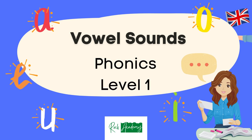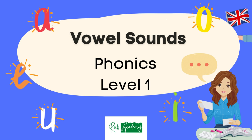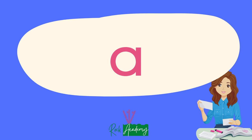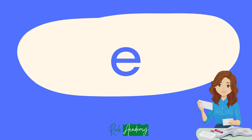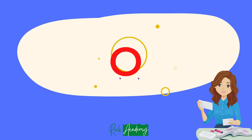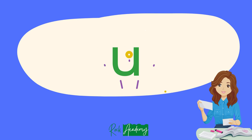Vowel Sounds. There are five vowels in the English alphabet: A, E, I, O, U.